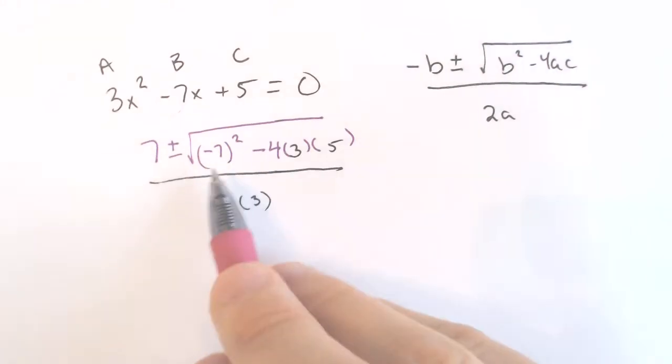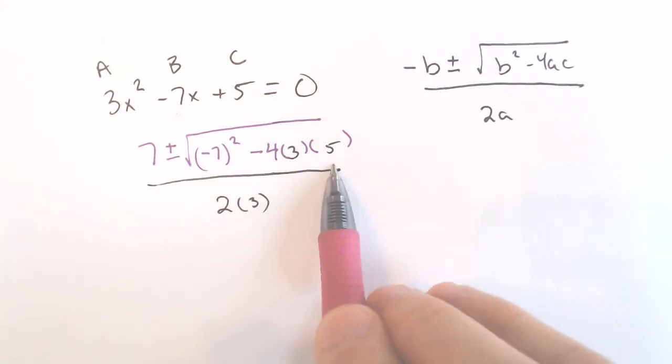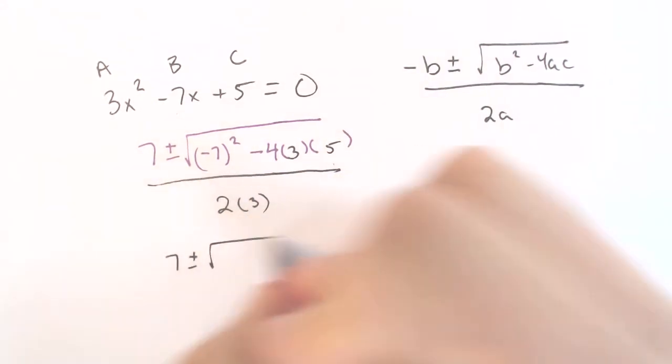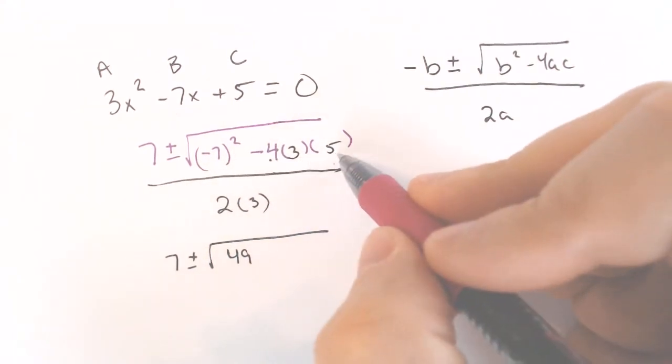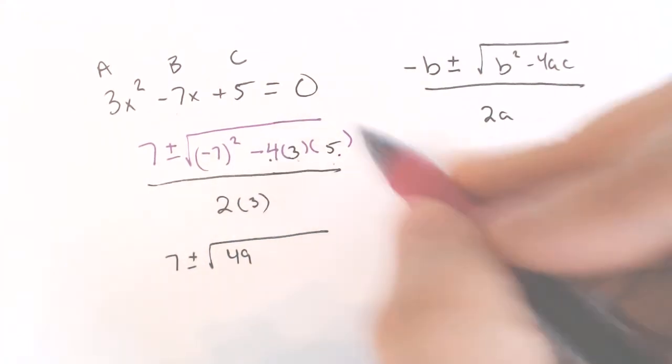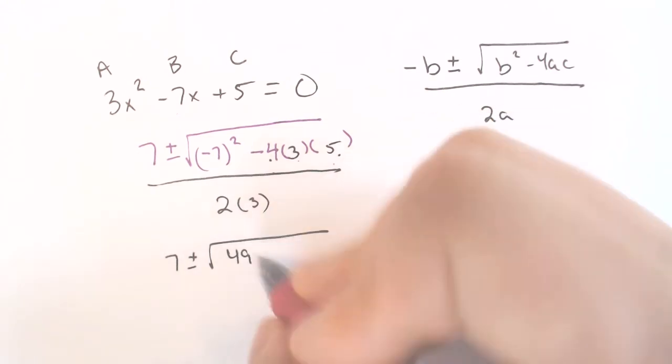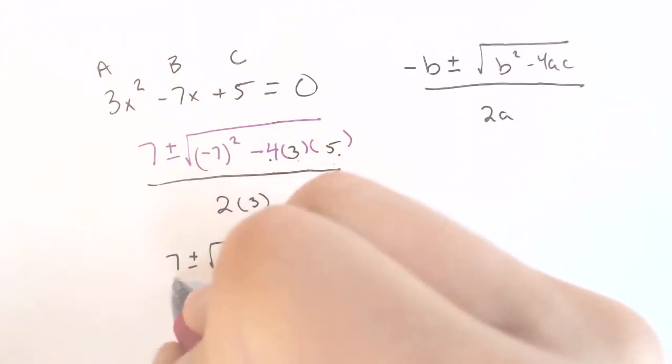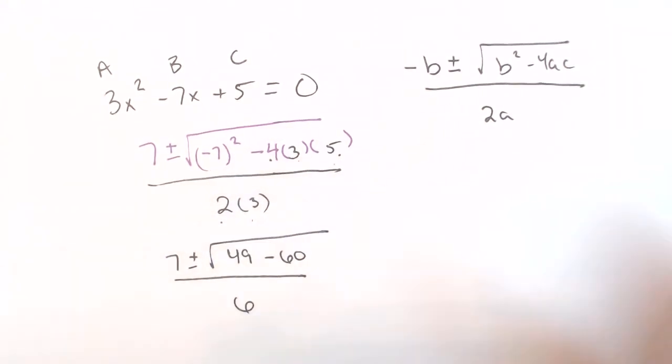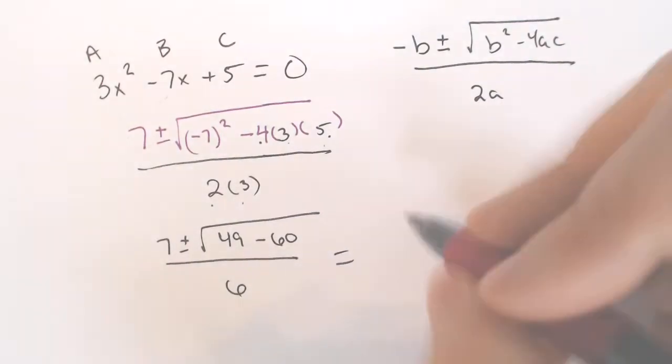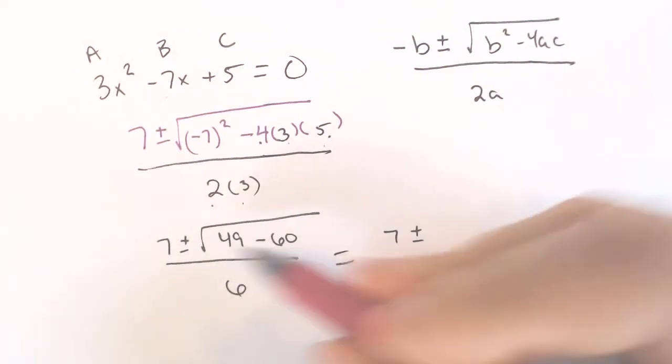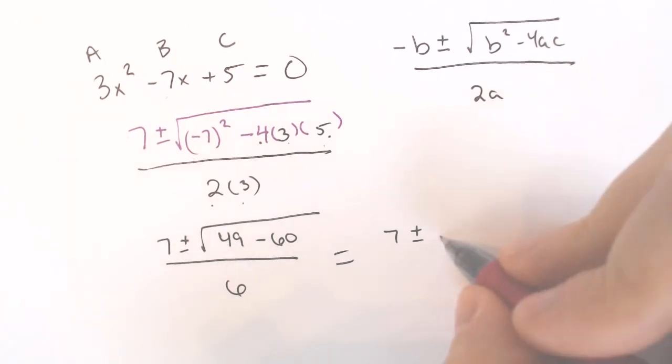So we just do this square root part first. 7² minus 4 times 3 times 5, which ends up being 7 plus or minus the square root of 49, negative 4 times negative 5 and 3, all multiplied together, end up being negative 60. And 2 times 3 is 6. So 49 minus 60 is 7 plus or minus negative 11, all over 6.